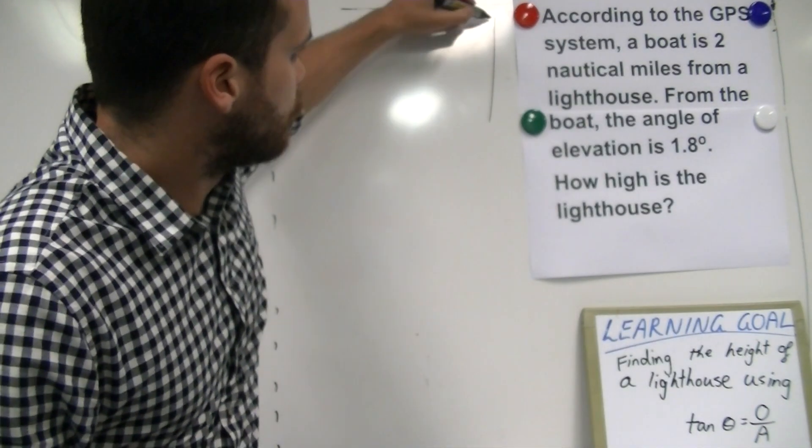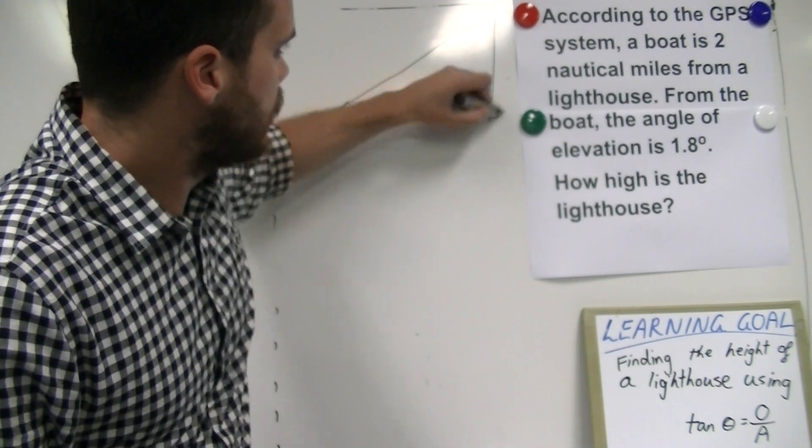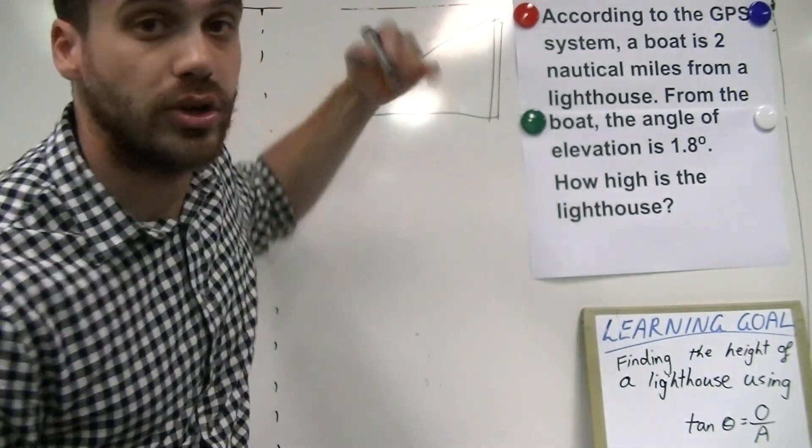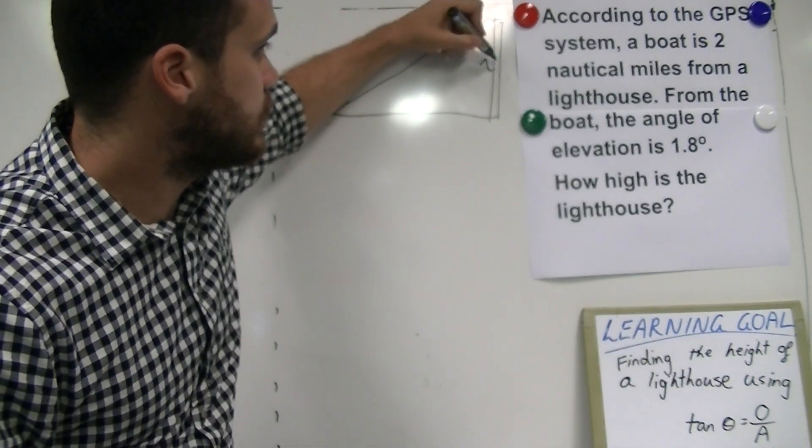First of all it's a good idea to draw these things. You have a lighthouse here but you don't know what the height of that lighthouse is so we can say that that's x.